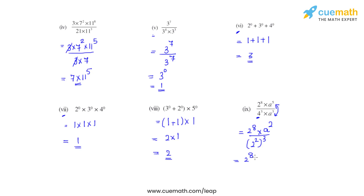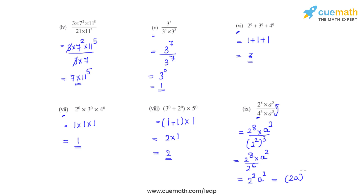That gives us 2 raised to 8 times a squared, divided by 2 raised to 6 — since 2 raised to 2 whole raised to 3 equals 2 raised to 6. Using the quotient law, 2 raised to 8 divided by 2 raised to 6 gives 2 raised to 2. So the answer is 2 raised to 2 times a raised to 2. Since the powers are the same, we multiply the bases, giving the final simplified answer as 2a the whole square.